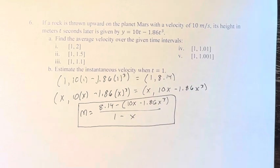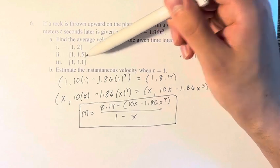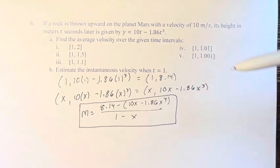This is the average velocity between the time of one second after release to time x. For the average velocities that we need, 2, 1.5, 1.1, 1.01, and 1.001, I've prepared the calculations.